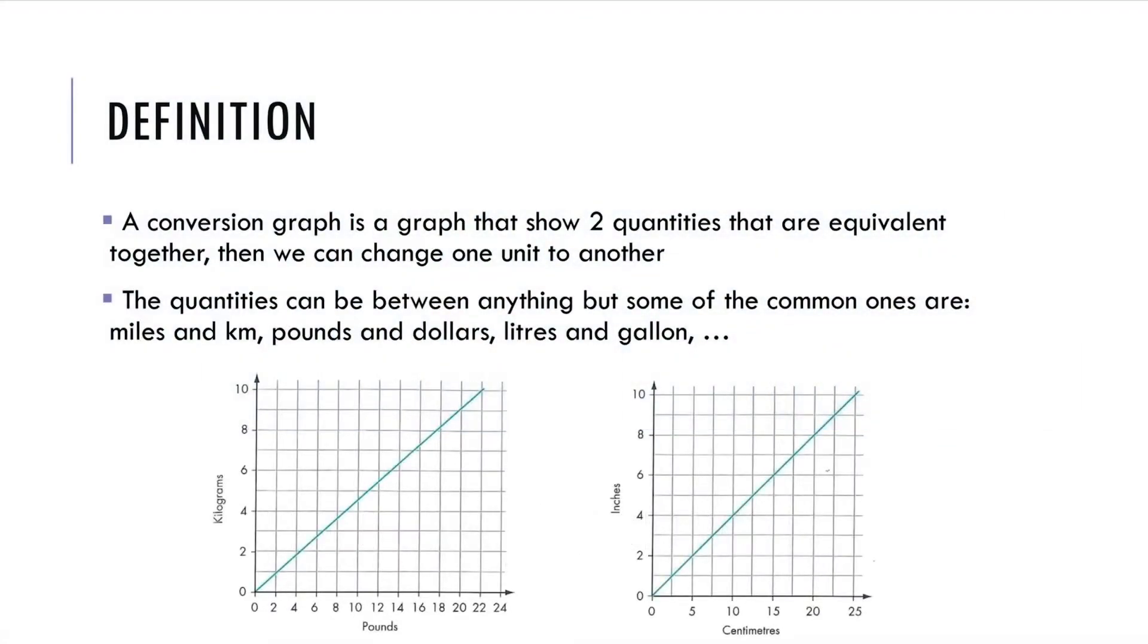A conversion graph is a graph that shows two quantities that are equivalent together. Then we can change one unit to another. The quantity can be between anything, but some of the common ones are miles and kilometers, pounds and dollars, or liters and gallons.